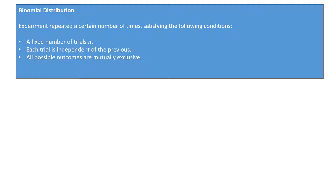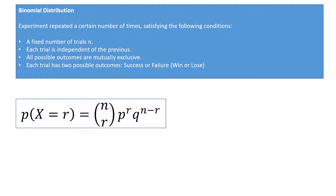Finally, and very importantly, each trial in this experiment will have two possible outcomes — either success or failure, meaning win or lose, yes or no, or hit or miss. Two possible outcomes: hence the term binomial distribution.